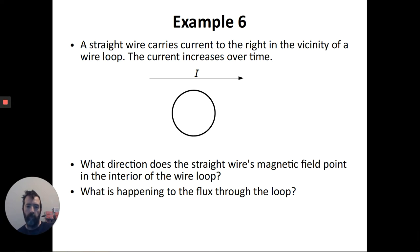Number six. I have a straight wire carrying a current I to the right. And that current is getting stronger over time. First of all, what direction does the straight wire's magnetic field point in the interior of the wire loop. So we need to actually use one of our right-hand rules now. I'm talking about the field that's produced by the wire. So I want to use the production rule. That's the one where I let my thumb be the current.